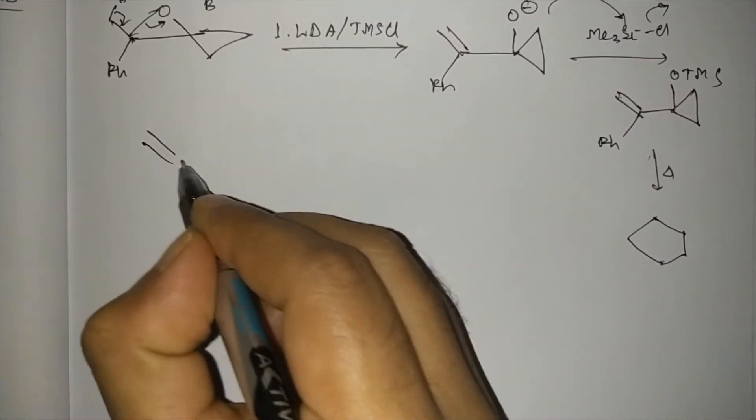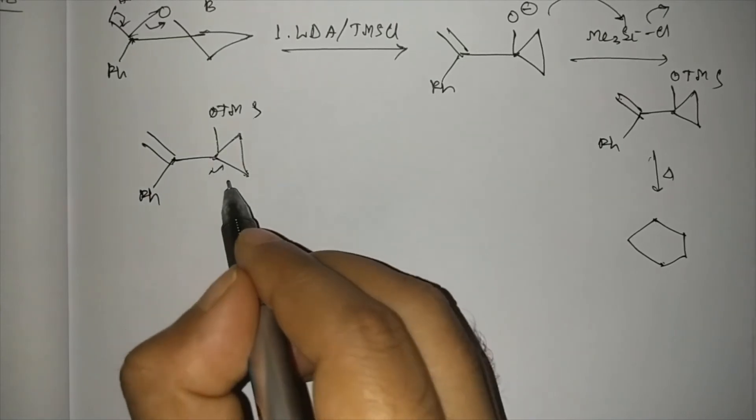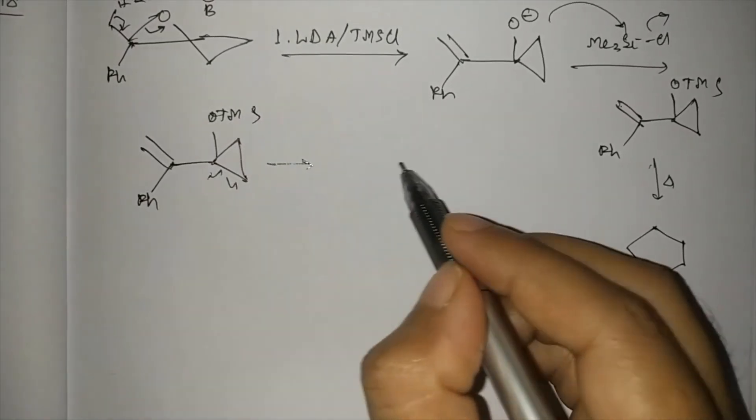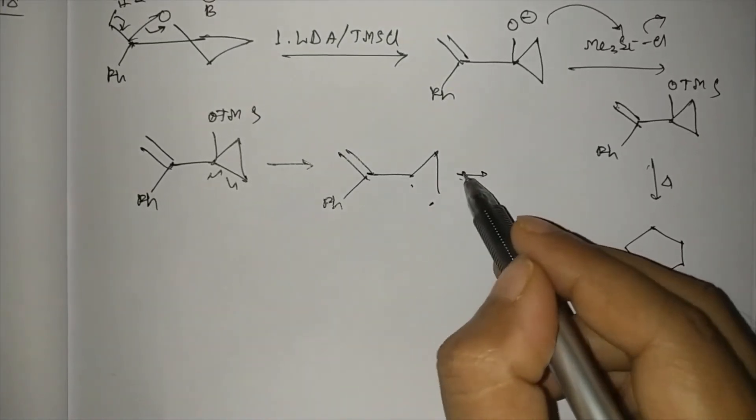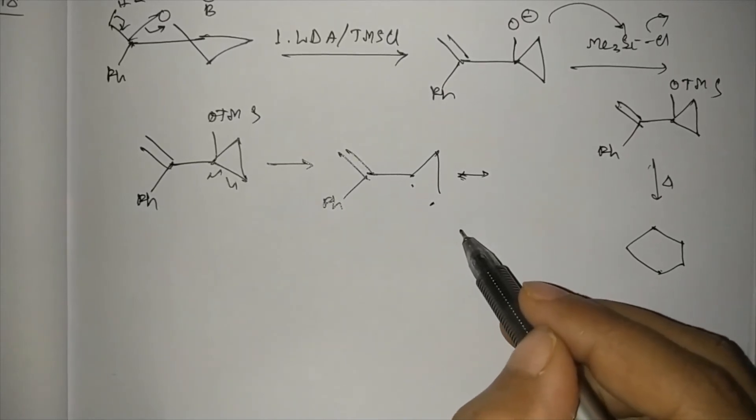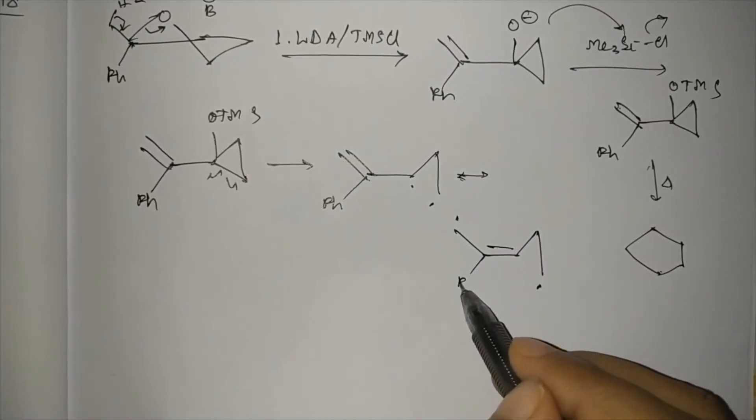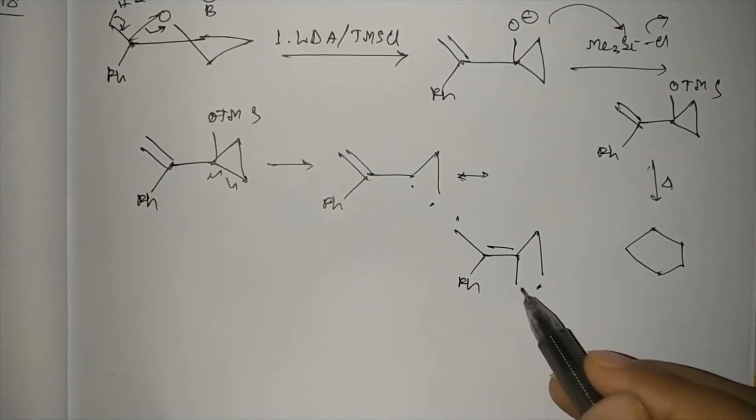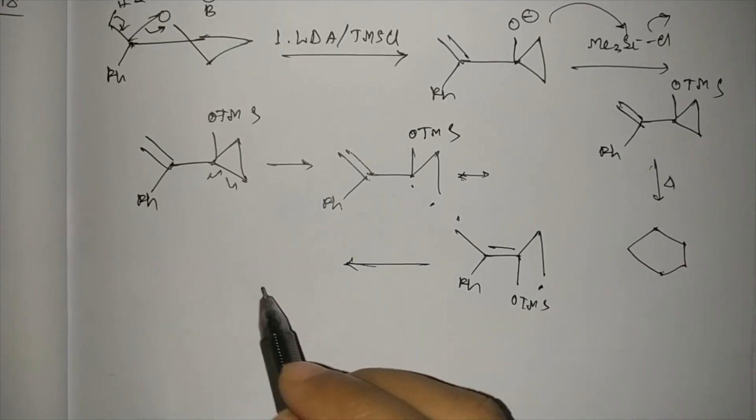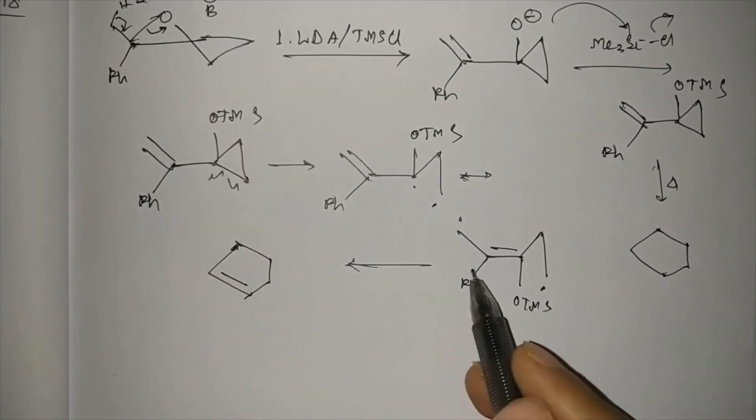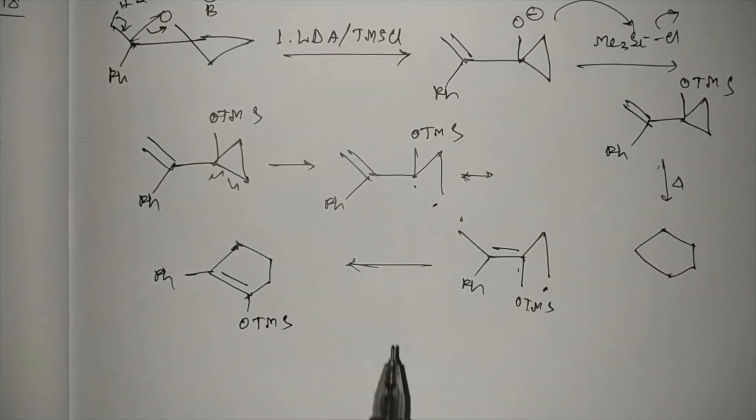OTMS. So first, one of this ring is broken, one of the bonds is broken, so two radicals will be formed, and this will rearrange to another radical. Now these two radicals recombine. Here is OTMS. Now these two radicals recombine to form a cyclopentene derivative. Double bond, so double bond contains phenyl and OTMS group. So this will be the product, OTMS group.